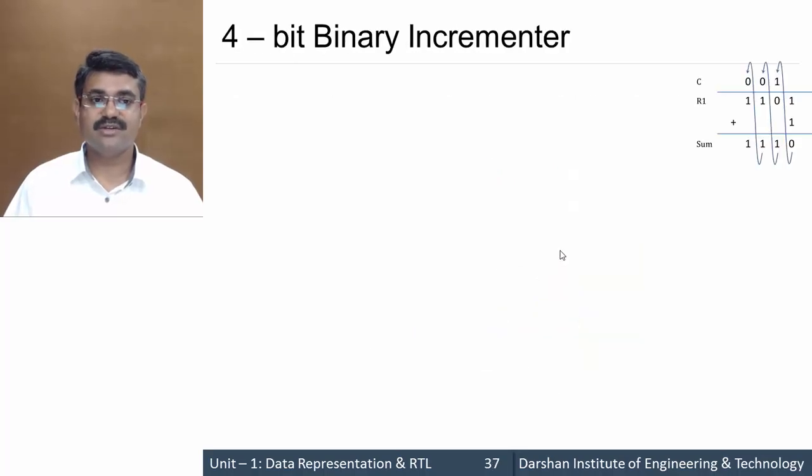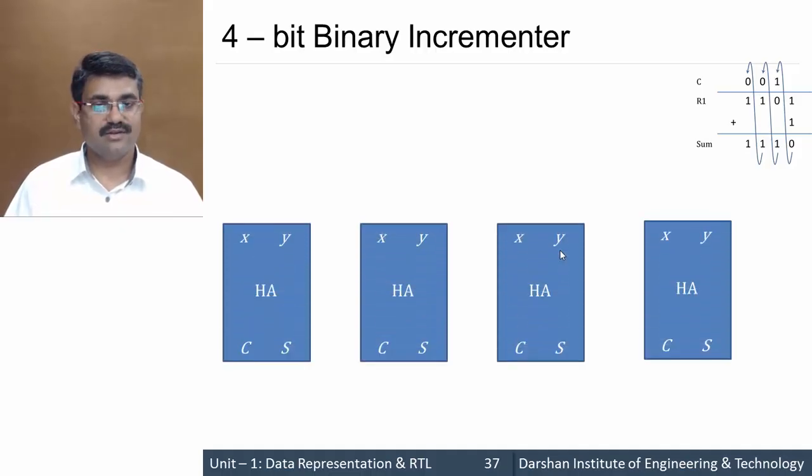We're keeping our example intact—4 bits, so we require 4 half adders. Half adders have 2 inputs and 2 outputs. For the rightmost half adder, the LSB, we give 1 as direct input and the first bit of the register, A0.